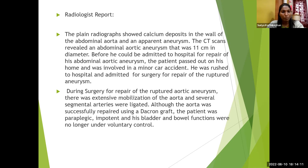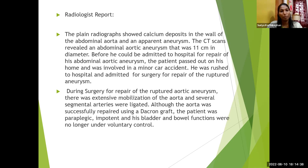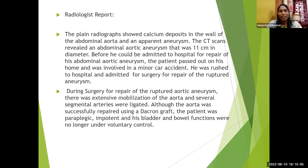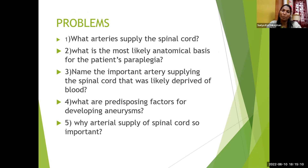The patient became paraplegic, impotent, and his bladder and bowel functions were no longer under voluntary control. Even after repair of the aneurysm, the patient was not stabilized. So the questions to answer at the end of session are: What is the arterial supply of the spinal cord? What is the most likely anatomical basis for the patient's paraplegia? Name the important artery supplying the spinal cord that was likely deprived of blood. What are the predisposing factors for developing aneurysms? Why is the arterial supply of the spinal cord so important?